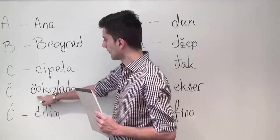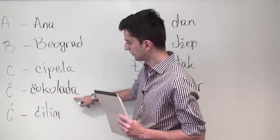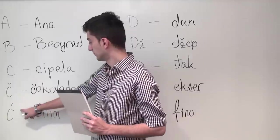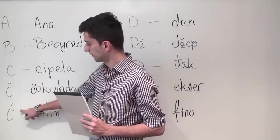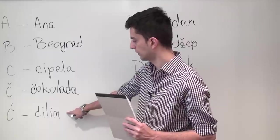Now Ć can be heard in the word čokolada that means chocolate, so Ć which is a bit softer can be heard in the word ćilim which means rug or carpet.